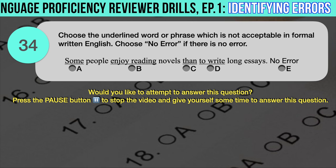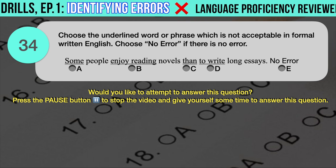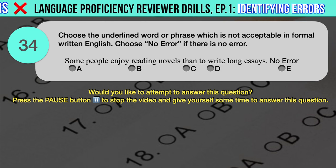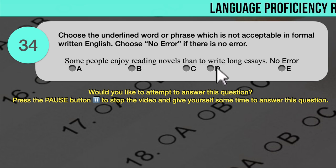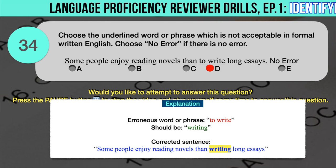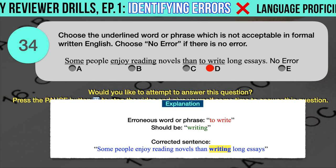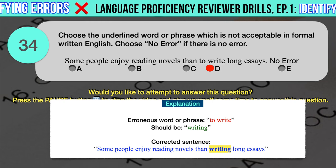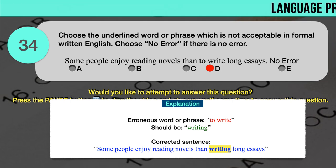Drill question number 34. 'Some people enjoy reading novels than to write long essays.' The underlined words are: A. Some, B. Enjoy reading, C. Than, D. To write. The correct answer is D. 'To write' should have been 'writing.' The verbs 'reading' and 'to write' do not follow the parallel construction rule. Parallel construction is the repetition of a chosen grammatical form within a sentence — each compared item should follow the same grammatical pattern. Correct sentence: Some people enjoy reading novels than writing long essays.